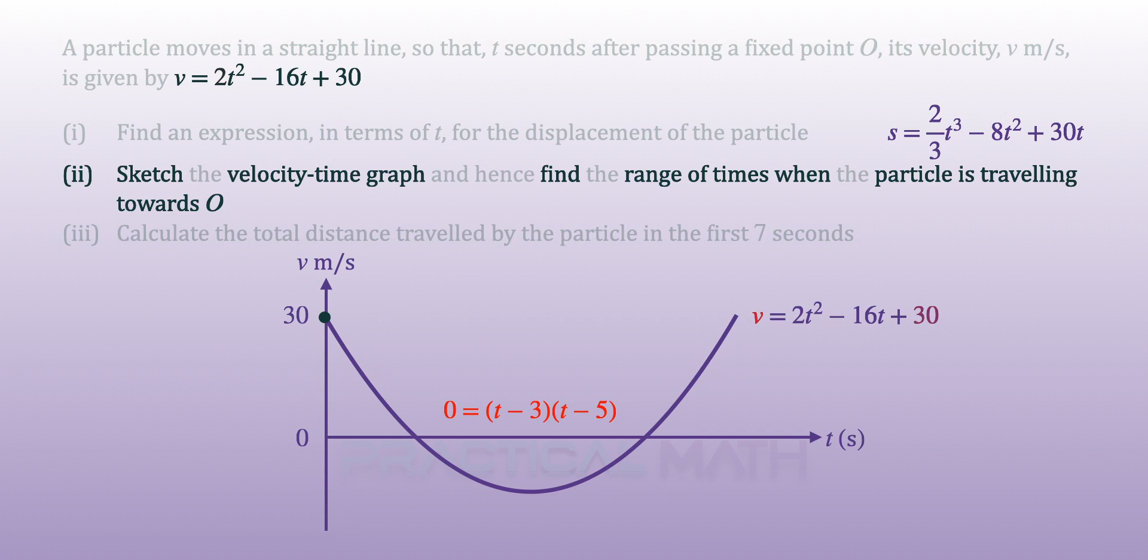Similarly, by replacing v to be 0 and solving for t, t will be equal to 3 and 5 and that will be our horizontal intercepts. By finding the midpoint between the horizontal intercepts, we will get a line of symmetry to be t equals 4. Replacing t to be 4 into the v equation, we have our minimum point to be (4, -2). And we have completed our sketch.